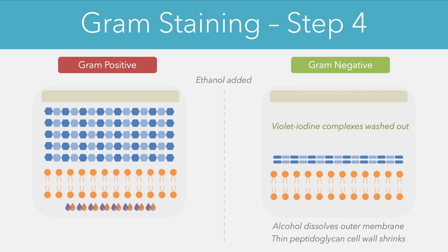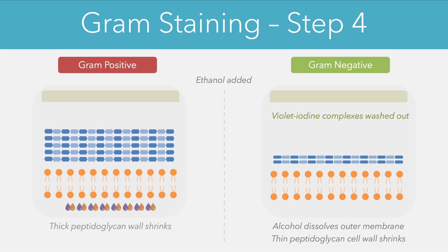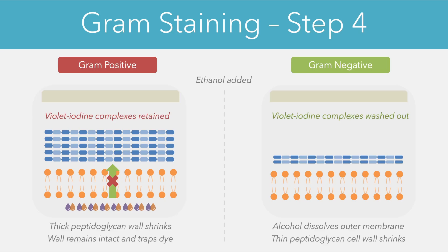If we compare this to gram positive cells — when we add the ethanol it again diffuses across and hits the cell wall causing it to become quite shriveled and shrunk. However, because the cell wall was quite thick to begin with, it's still strong enough to retain the crystal violet and it prevents the crystal violet iodine complexes from being washed out. At the end of this step the gram positive cells have retained the violet iodine complexes while the gram negative cells have lost them. Under the microscope we would find a range of purple cells representing the gram positive types and a range of colourless cells representing the gram negative.